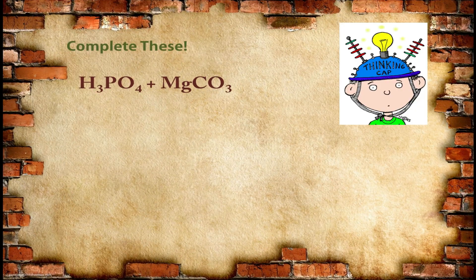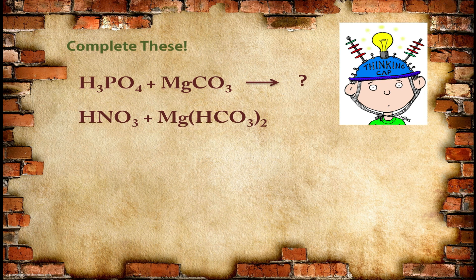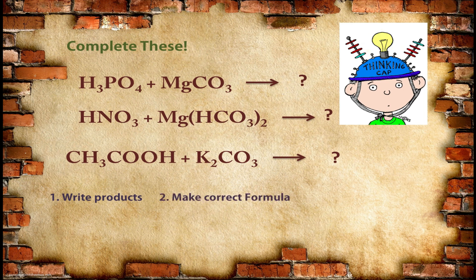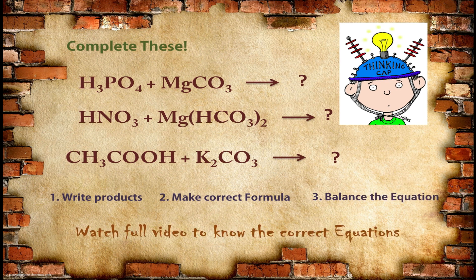Now complete these by yourself. When phosphoric acid reacts with magnesium carbonate, what will be the formula of the product? When nitric acid reacts with magnesium bicarbonate, what will be the product? When acetic acid reacts with potassium carbonate, identify the product and complete these equations by yourself. Remember the three steps: write the products, make the correct formula of products, then balance the equation. Watch the full video to know the correct equations at the end.